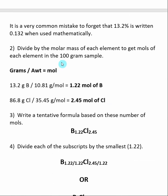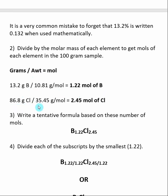We know how many grams were present; now we want to calculate the number of moles. If you take grams and divide by the atomic weight, that will tell you the number of moles. We determined there is 13.2 grams of boron, and dividing by the atomic weight of boron gives 1.22 moles of boron. Similarly, 86.8 grams of chlorine divided by the atomic weight of chlorine gives 2.45 moles of chlorine in our 100-gram sample.